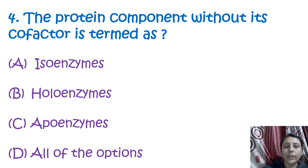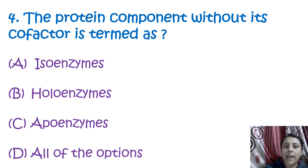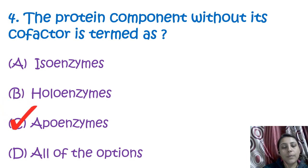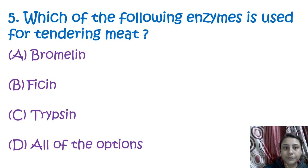The next question is: the protein component without its co-factor is termed as apoenzyme, and the protein component with its co-factor is termed as holoenzyme.